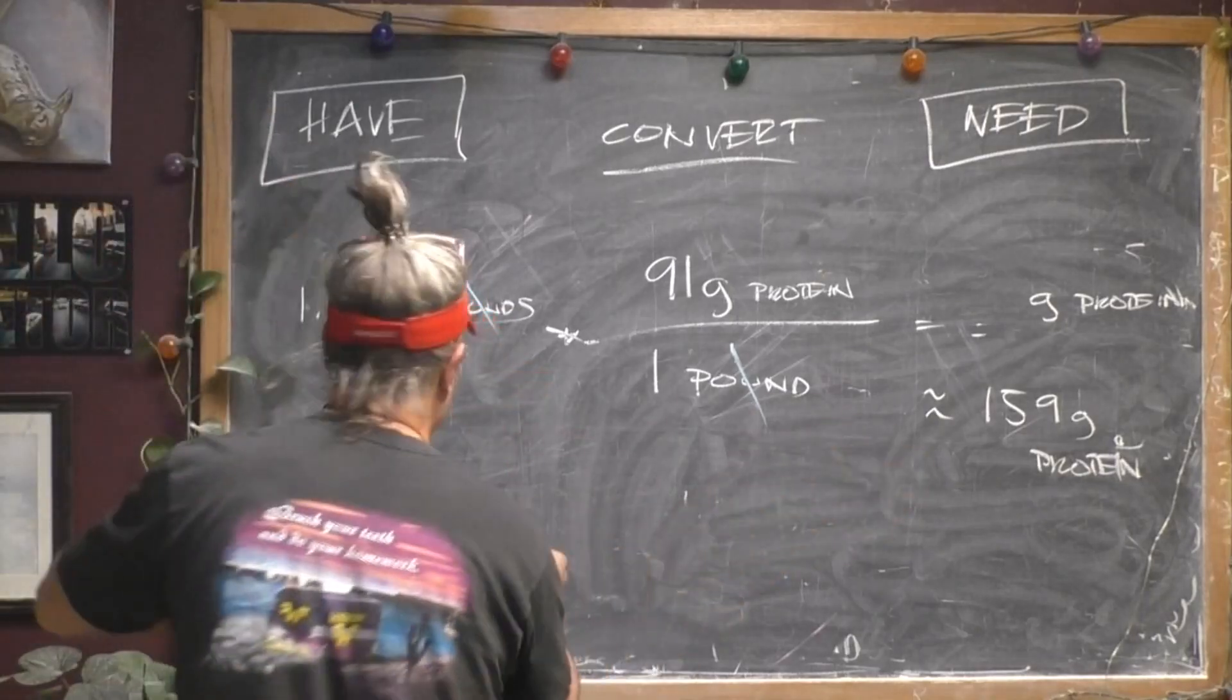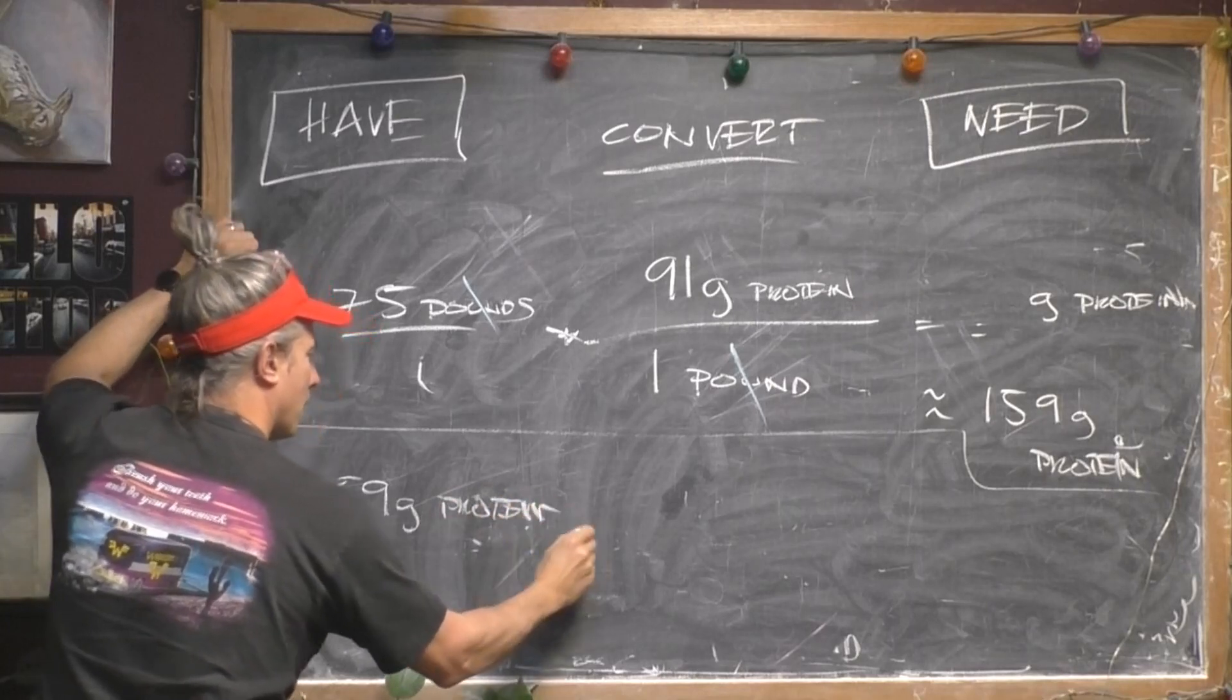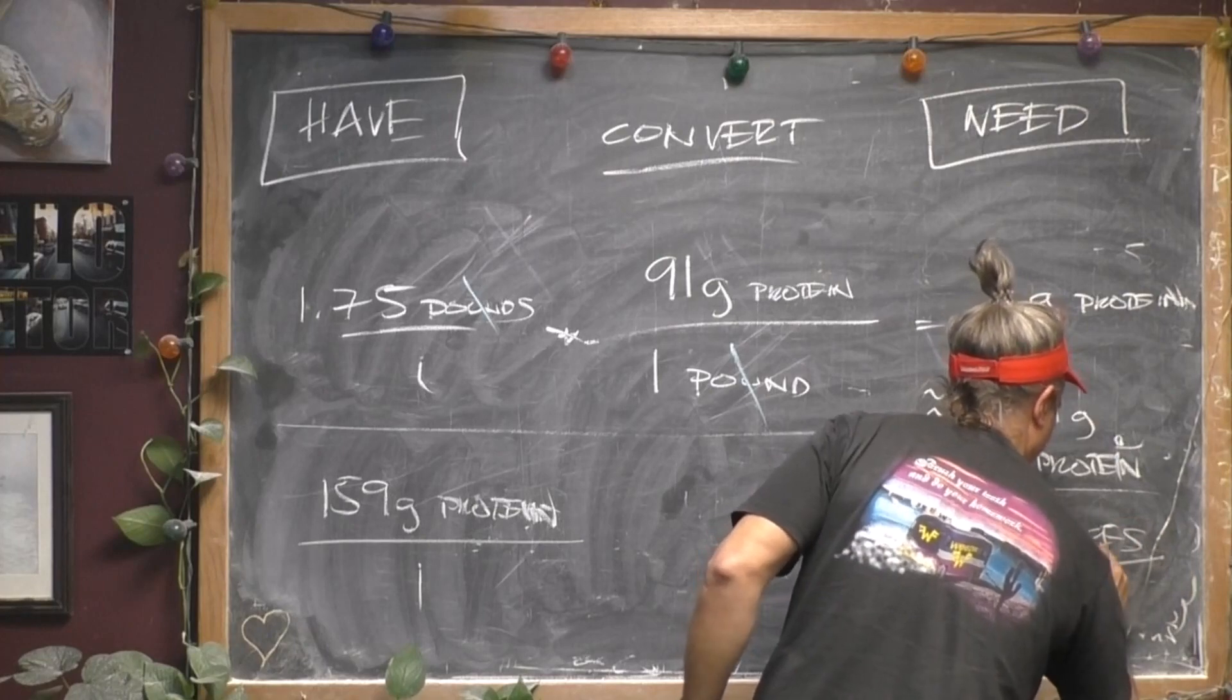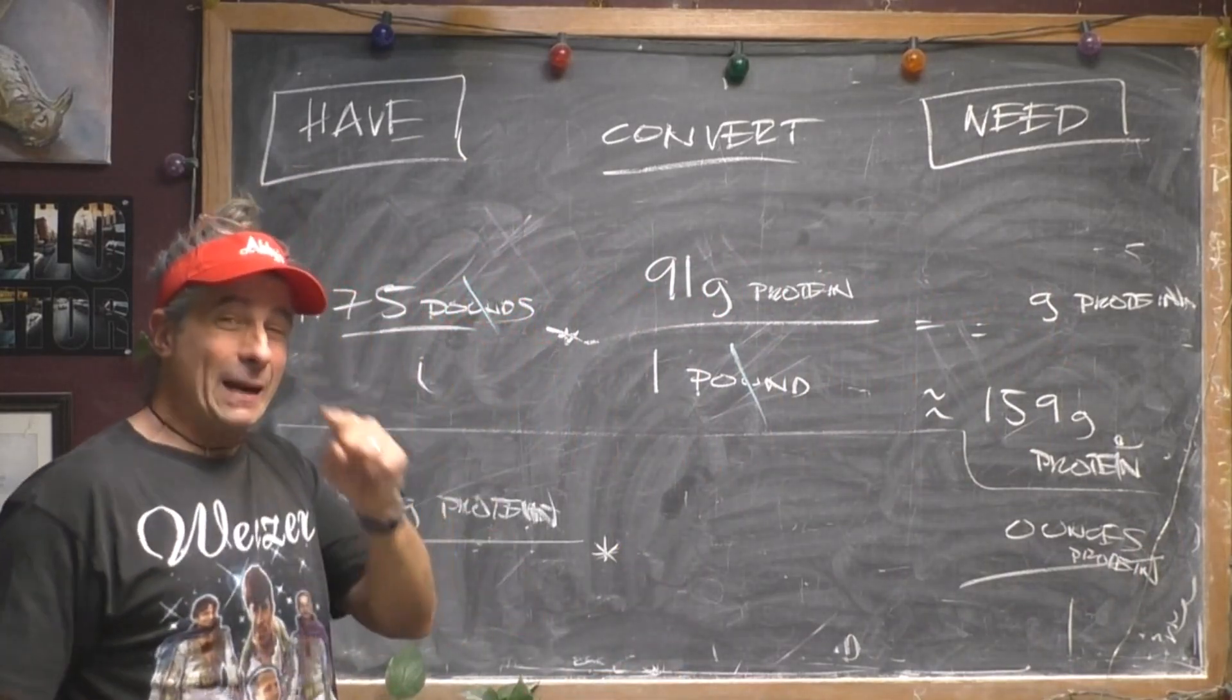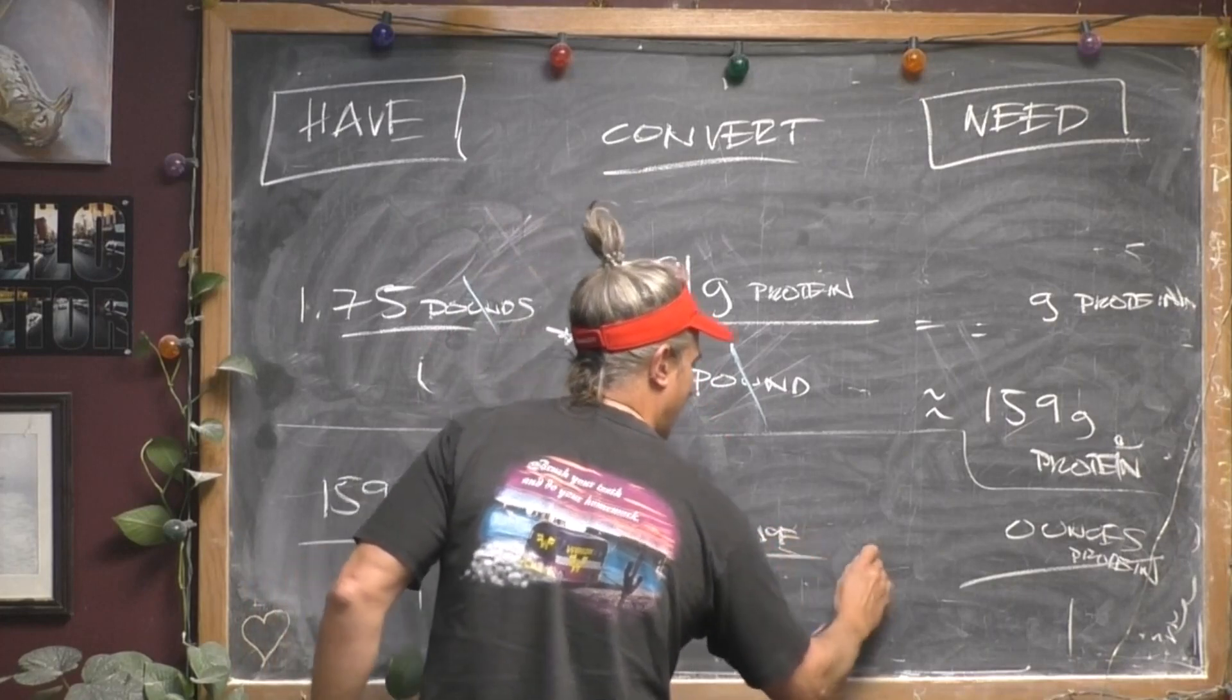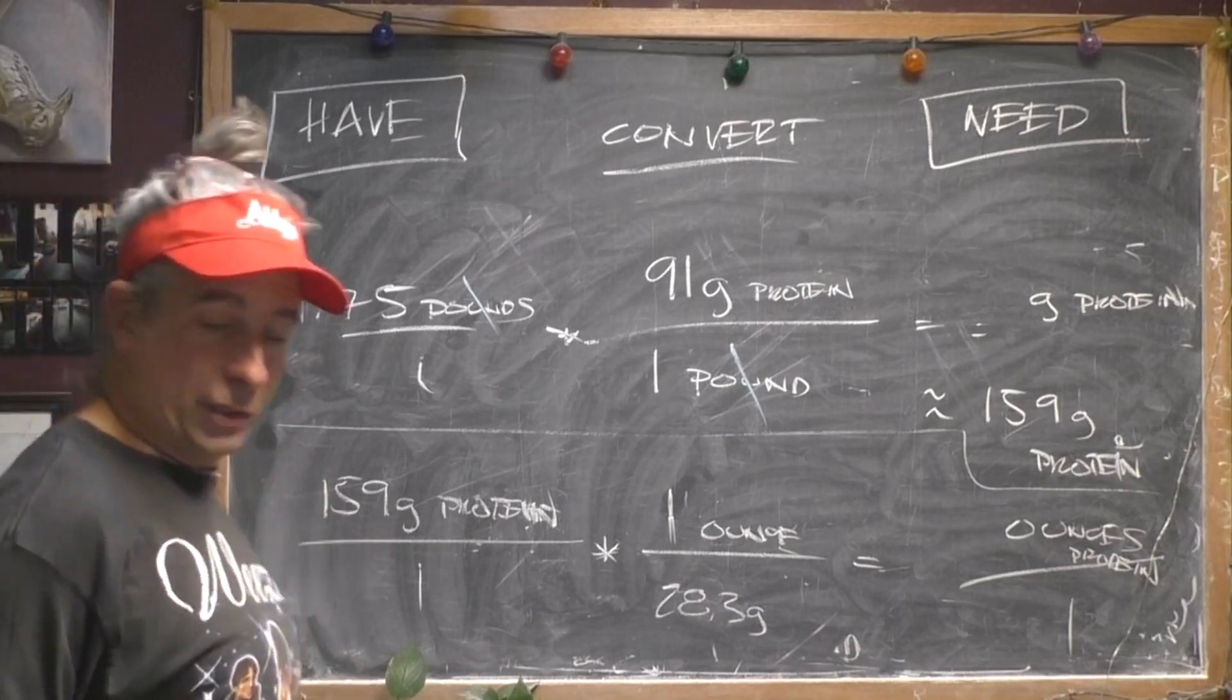This is a new problem. So we have 159 grams of protein. We need ounces of protein out the other side. The conversion we just Googled, 28.3 grams in one dry ounce. It gets a little confusing with the Imperial system. You got dry ounces and fluid ounces, but don't worry. This is definitely a dry ounce.